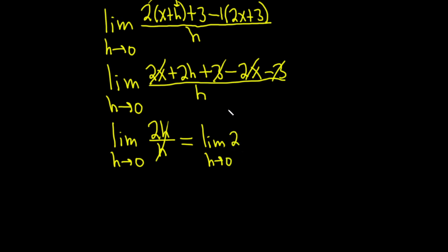And 2 is 2, right? Because h is approaching 0, but that means it has nothing to do with the 2. This is independent of h. So it's just going to be equal to 2. And that would be the derivative. And we would write that as follows. This is f prime of x equals 2. That's how you would write the answer.